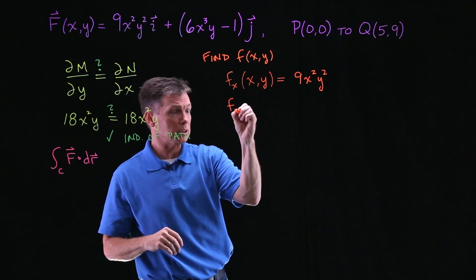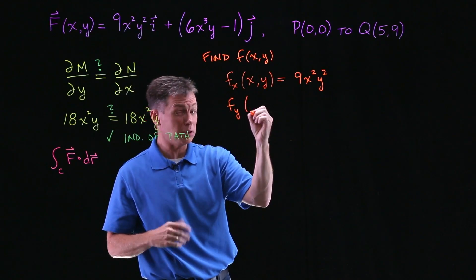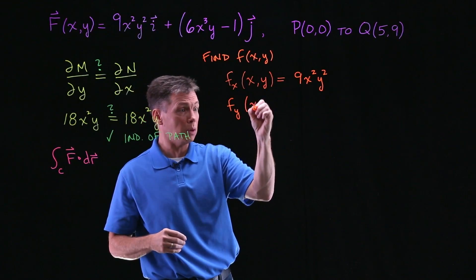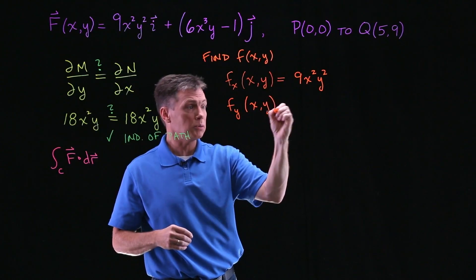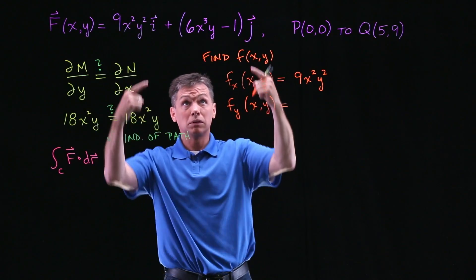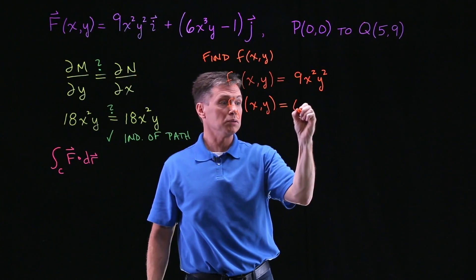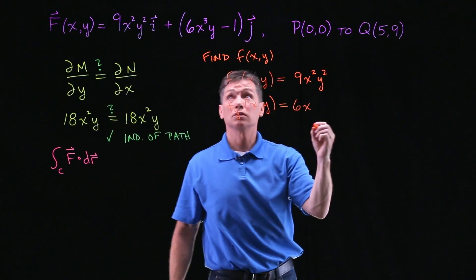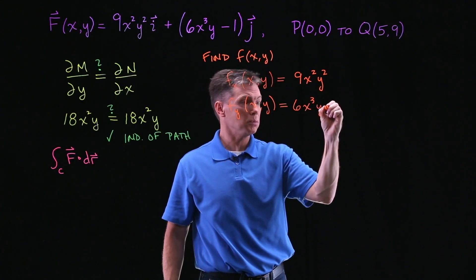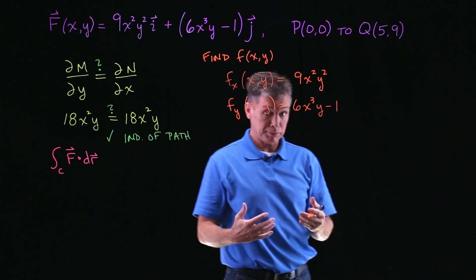And also realize very similarly that the partial of lowercase f with respect to Y will equal the N part of our force field function, so that's got to equal 6X³Y - 1.